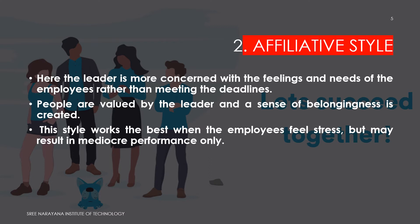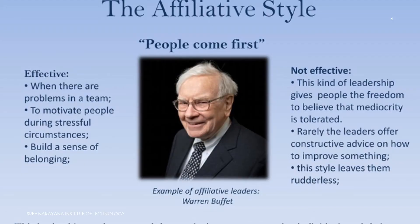In the affiliative style, the leader is more concerned with the feelings and needs of the employees rather than meeting deadlines. For example, if someone is sick and didn't turn up, the leader says 'do it when you're well enough.' But the work piles up and performance falls below standards — employees aren't stressed, but they're not achieving anything either. This style is effective for motivating people during stressful circumstances and building a sense of belonging, but not effective because people are given too much freedom and there is no direction.